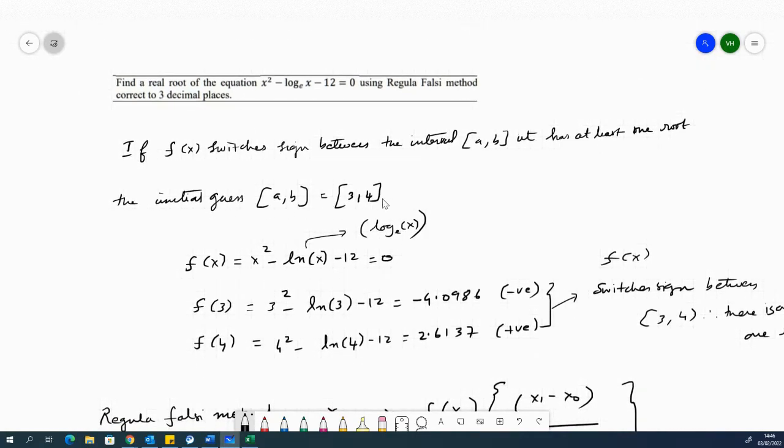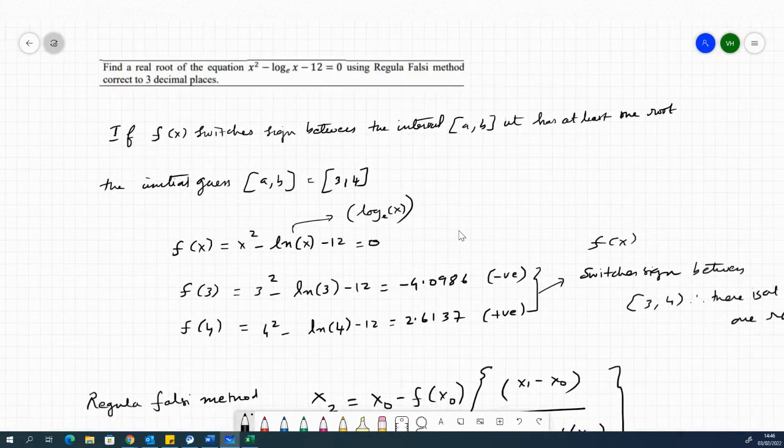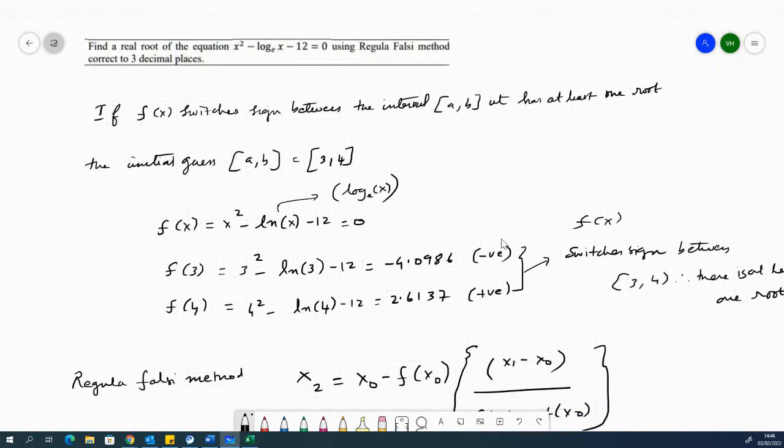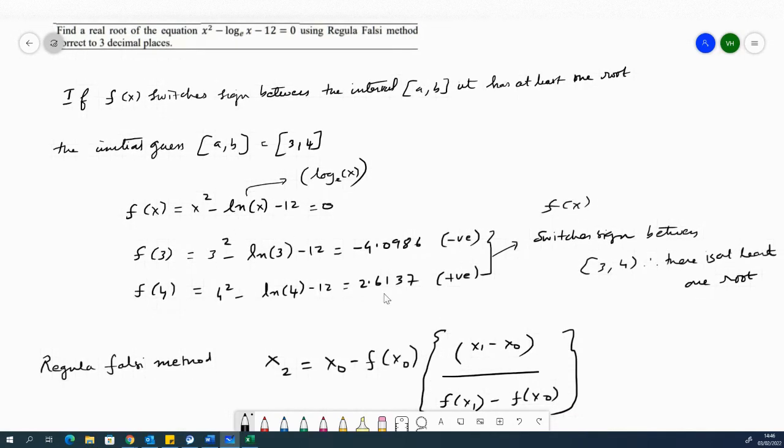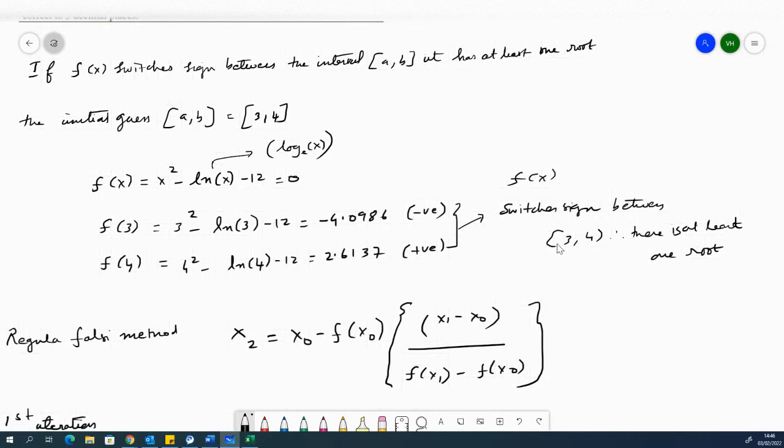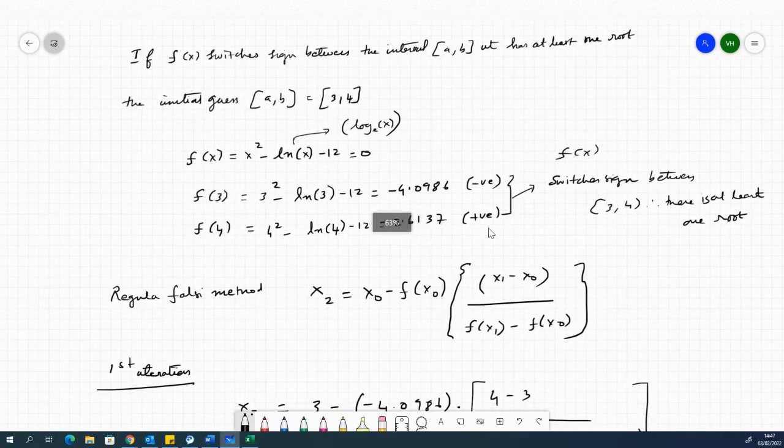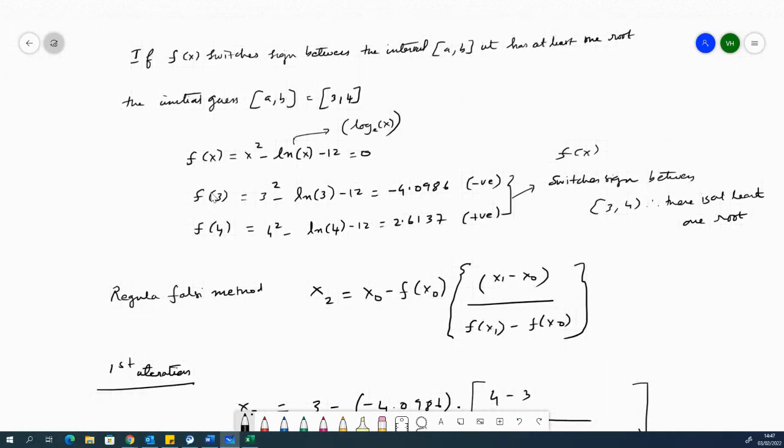The initial guess for this problem could be 3 comma 4. Obviously, you can try guessing 1, 2, 3, 4. You will end up seeing that the function f(x) in this case, which is x squared minus the natural logarithm ln of x minus 12 equal to 0. So if you actually substitute with the values of 3 and 4, you would see that the function f(x) switches sign between f of 3 and f of 4. As you can see, f of 3 is negative, f of 4 is positive. Therefore, it means that there is a root between 3 and 4, at least one real root between 3 and 4. Therefore, the regular falsi method can be applied with these intervals 3 and 4.